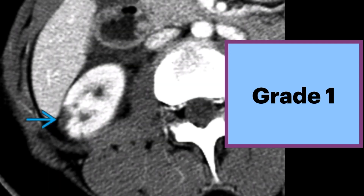Here's an example on this axial contrast-enhanced CT of a teenager. After a motor vehicle accident, there is a small hypodense renal contusion consistent with a grade 1 injury in the right kidney.